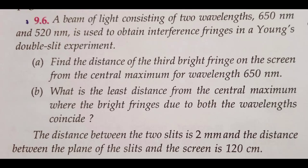A beam of light consisting of two wavelengths, 650 nanometer and 520 nanometer, is used to obtain interference fringes in a Young's double slit experiment. Find the distance of the third bright fringe on the screen from the central maximum for wavelength 650 nanometer. What is the least distance from the central maximum where the bright fringes due to both wavelengths coincide? The distance between the two slits is 2 millimeter and the distance between the plane of the slits and the screen is 120 centimeter.